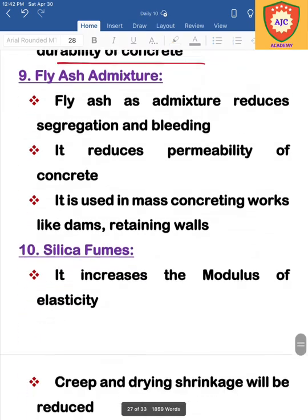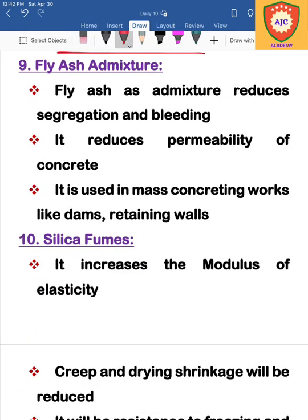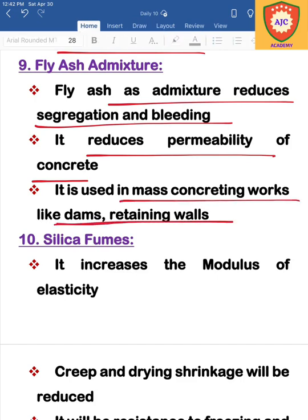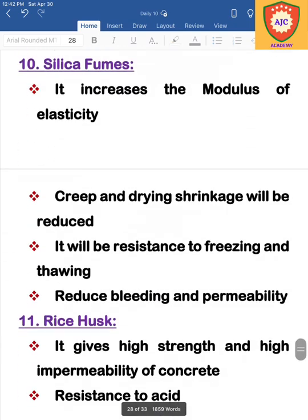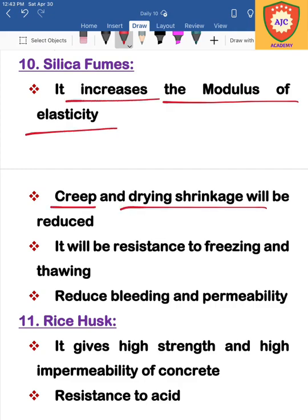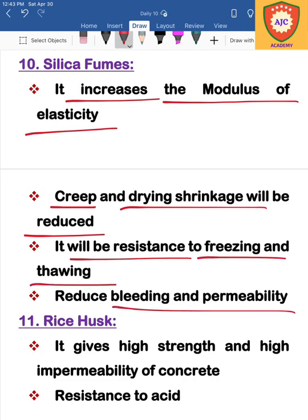The next admixture is fly ash, which reduces segregation and bleeding, controls permeability, and is used in mass concrete works such as dams and retaining walls. The next type is silica fumes, which increase modulus of elasticity, reduce creep and drying shrinkage, provide freezing and thawing resistance, and reduce bleeding and permeability.